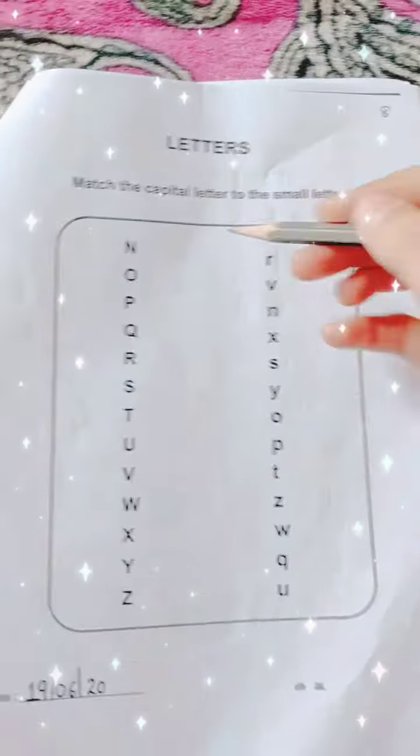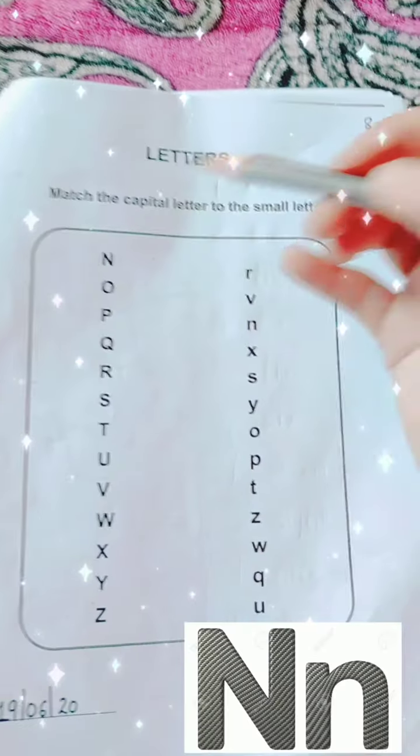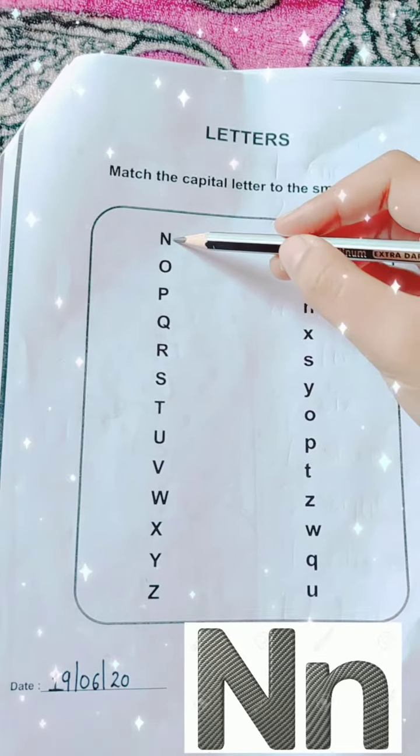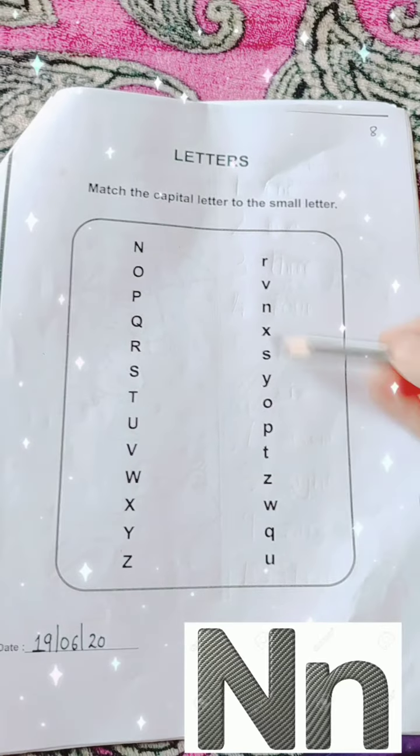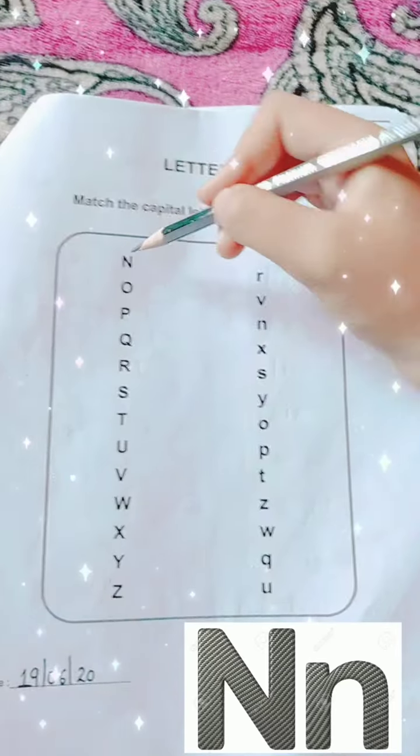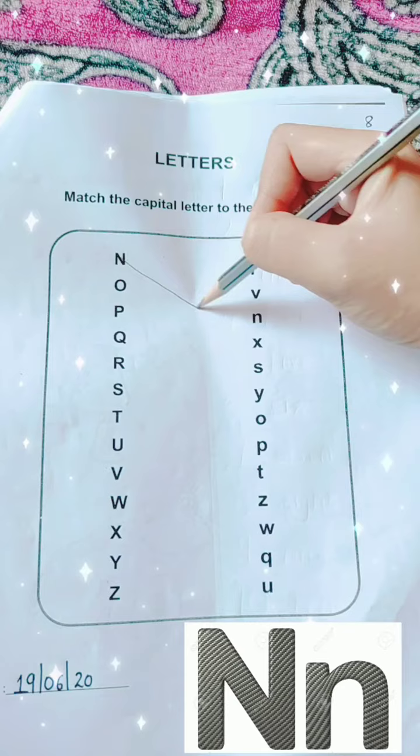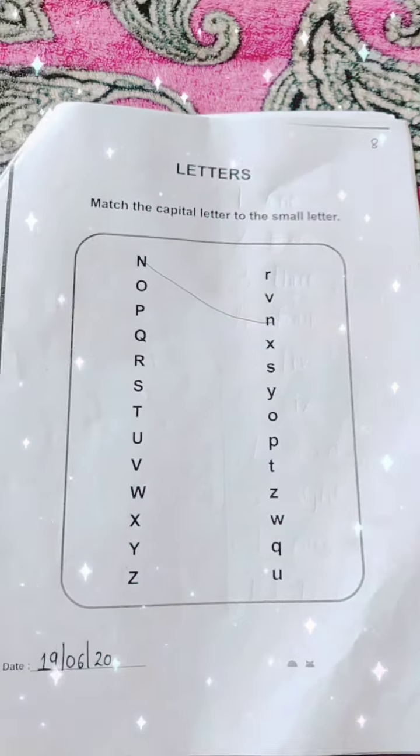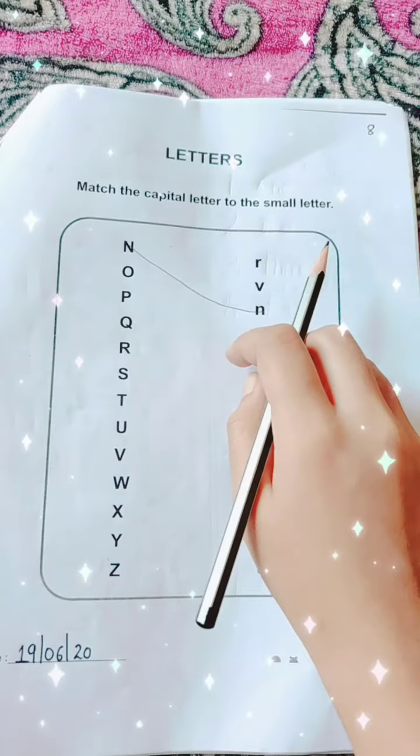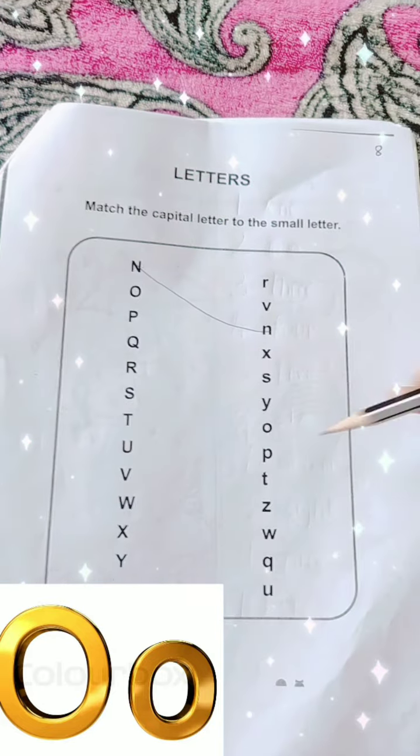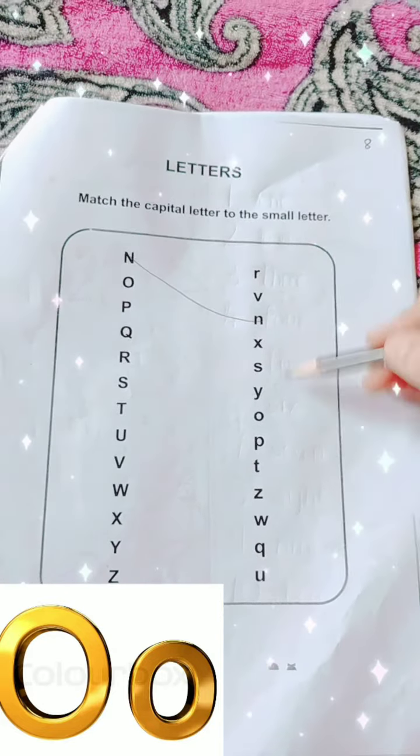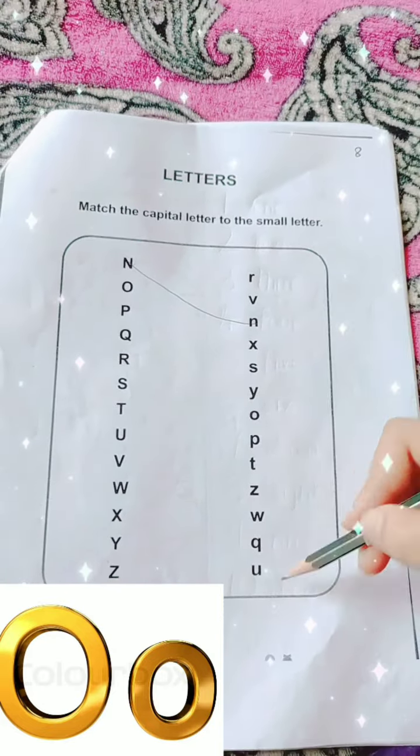First letter is capital N. So we are going to match this capital N to the small letter N. Where is small letter N on this side? Over here. So we are going to match capital with small. Next is capital O. Capital O with small letter O. Where is small letter O? Over here. So we are going to match it.